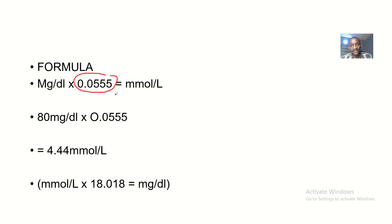0.0555. So now, milligrams per deciliter, you multiply by 0.0555. What was the value?